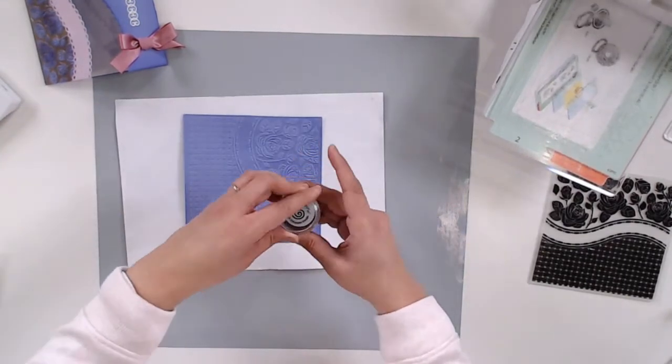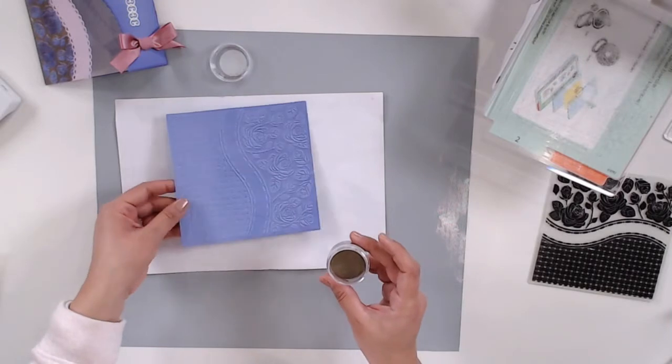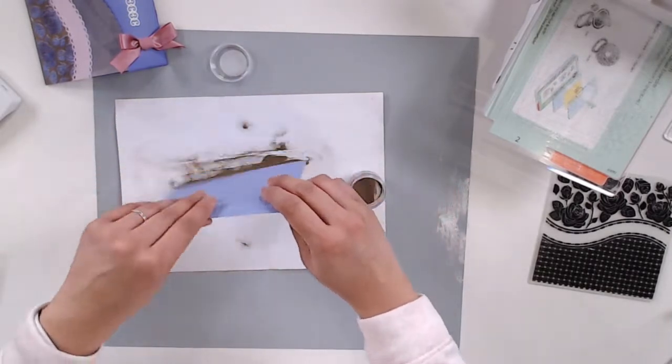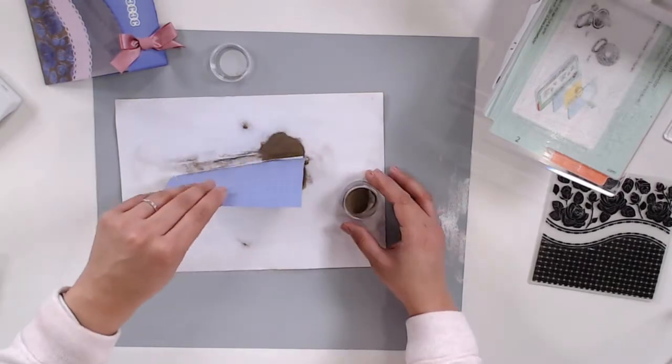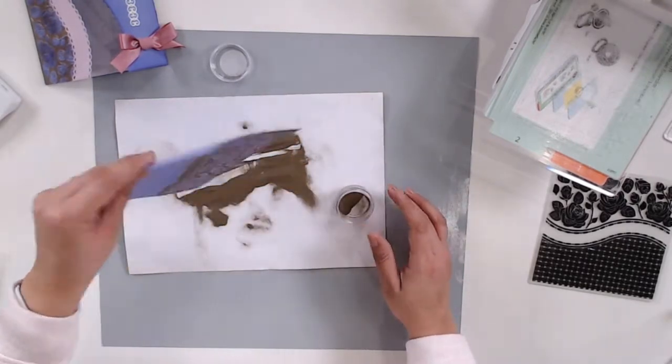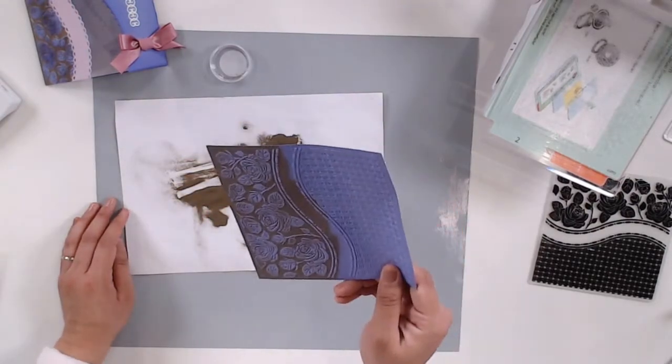I'm only going to be heat embossing half of the design because I'm going to be trimming the roses off to create my card. I'm sprinkling some Cosmic Shimmer embossing powder in gold and shaking off the excess.